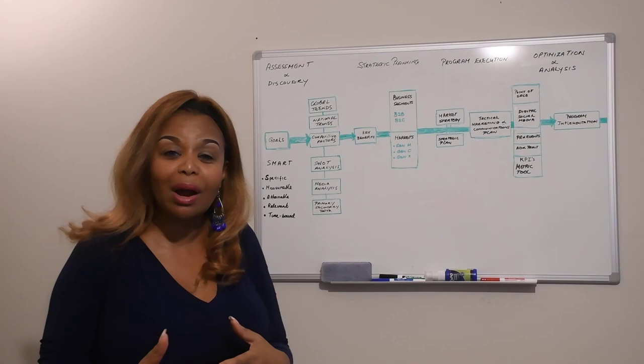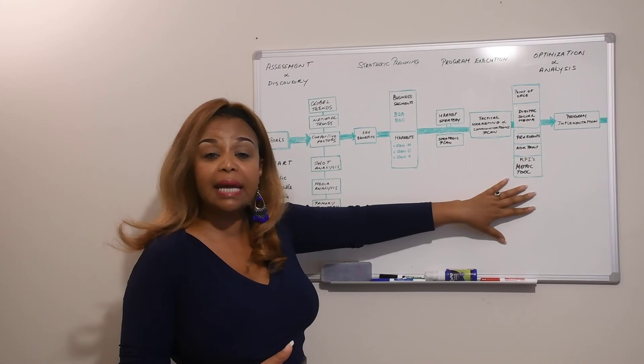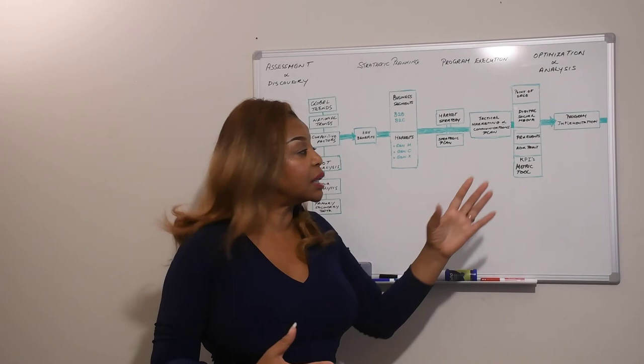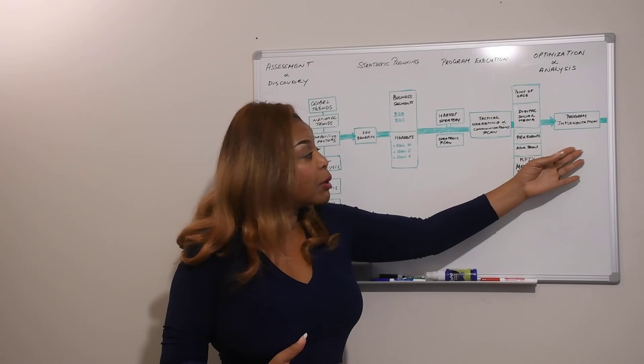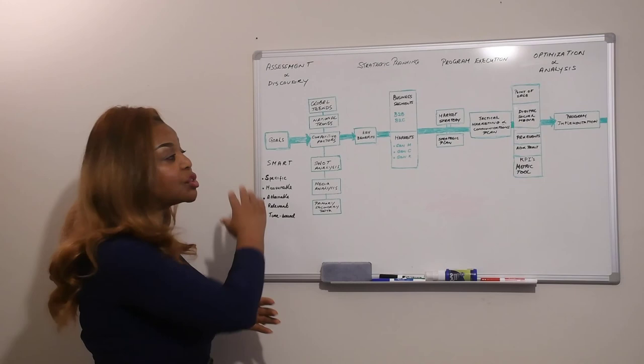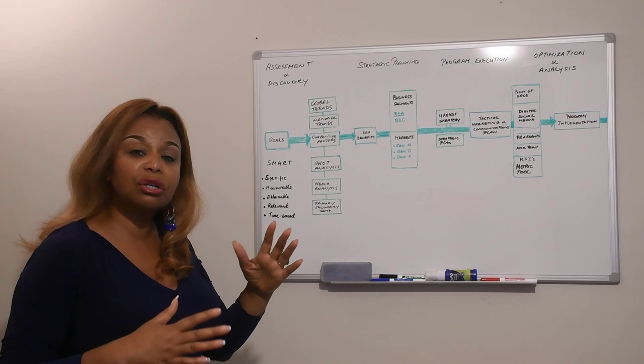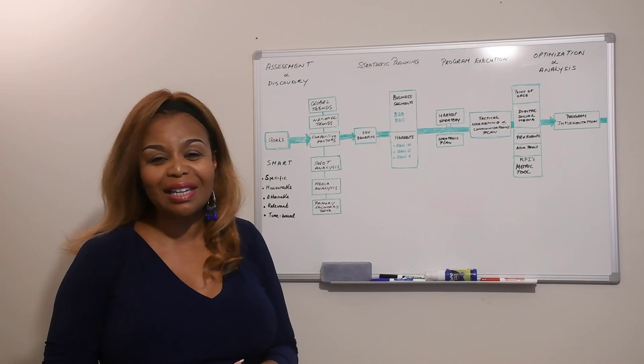Once you have all of your tactics laid out and you've put a budget behind that so you know what your investment is going to be, you can make sure that you're optimizing and analyzing each one of these programs as you launch them. In the program implementation phase, make sure that you constantly check back. This is a cyclical program. You're going to go through and make sure that you're still achieving the organization's goals and adjusting your program as you move forward. That's a brief view of the communications planning process.